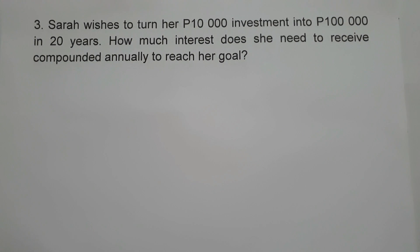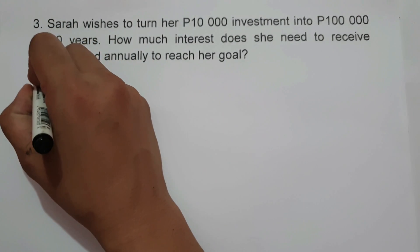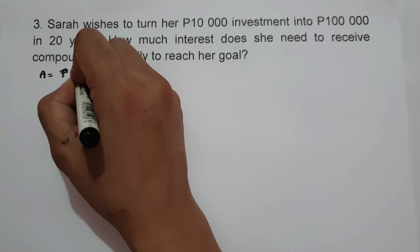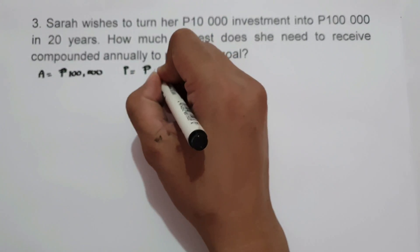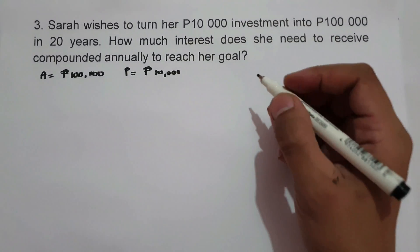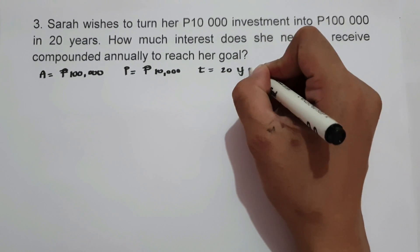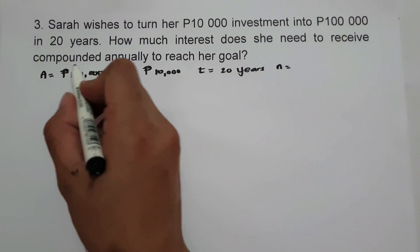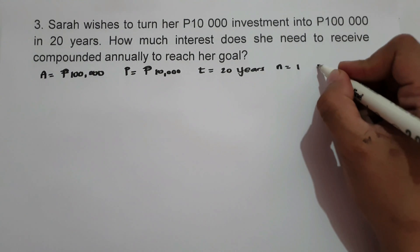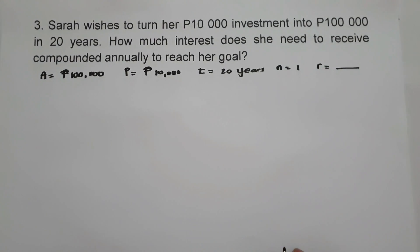For example number 3, Sarah wishes to turn her 10,000 pesos investment into 100,000 pesos in 20 years. How much interest rate does she need, compounded annually, to reach her goal? The given are: future value is 100,000 pesos, principal is 10,000 pesos, time is 20 years, and N is 1 since it is compounded annually. We are looking for the interest rate R.